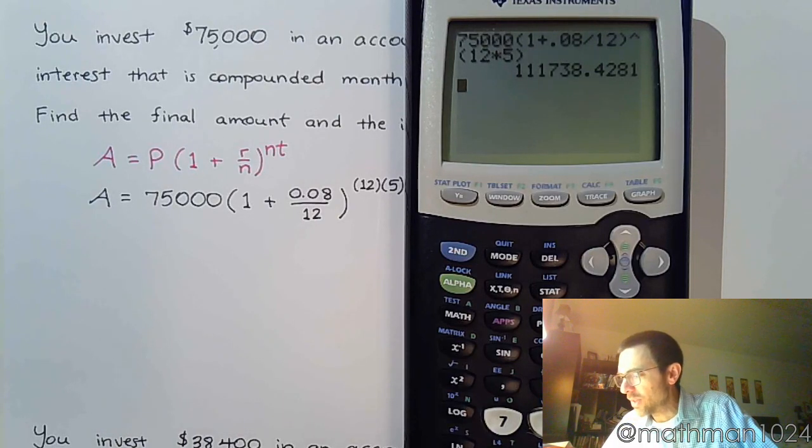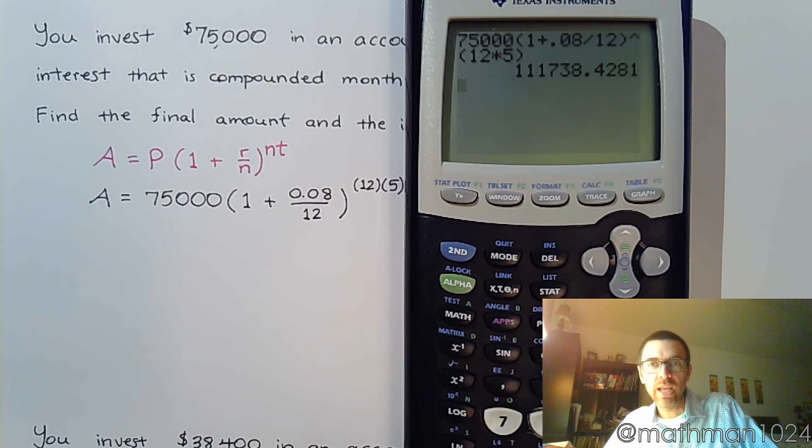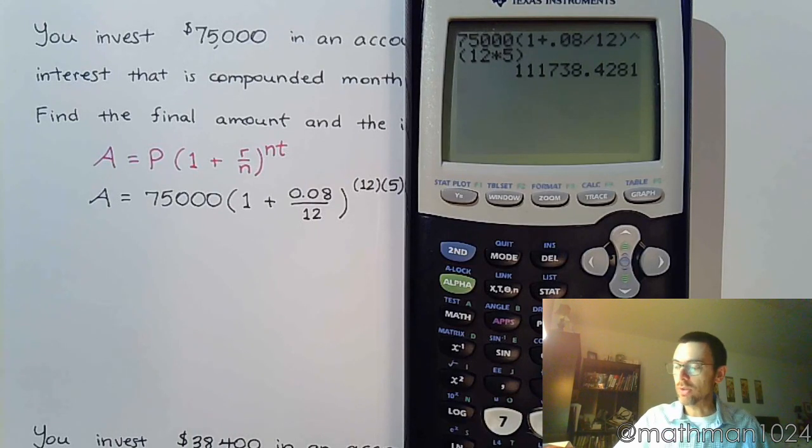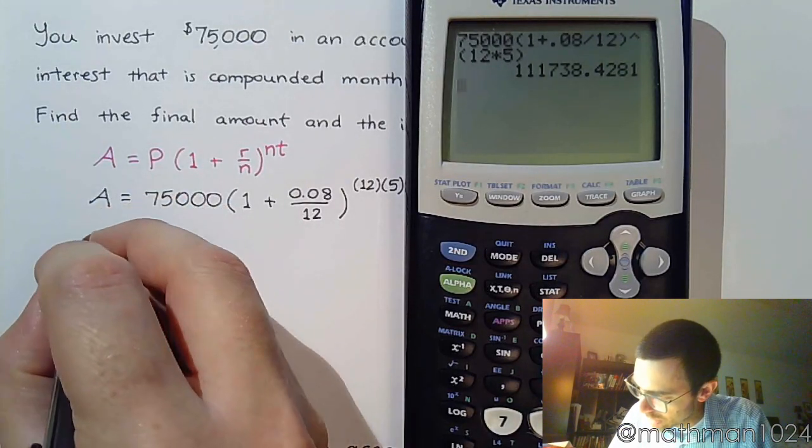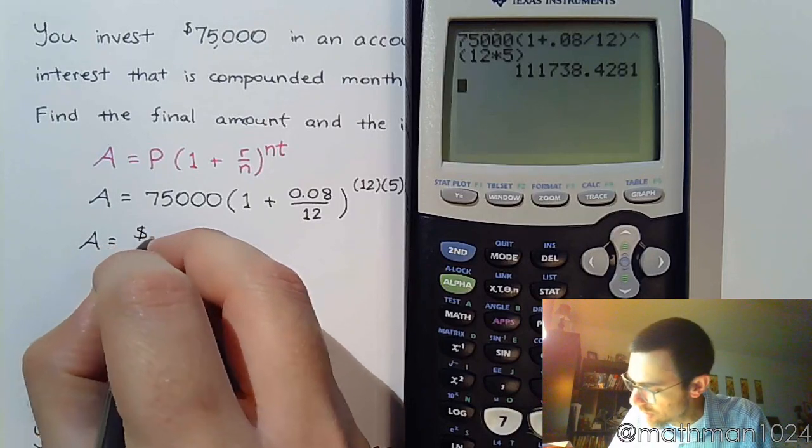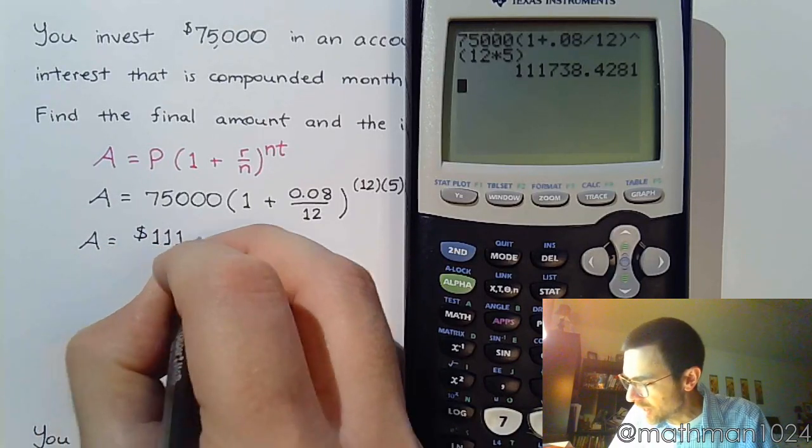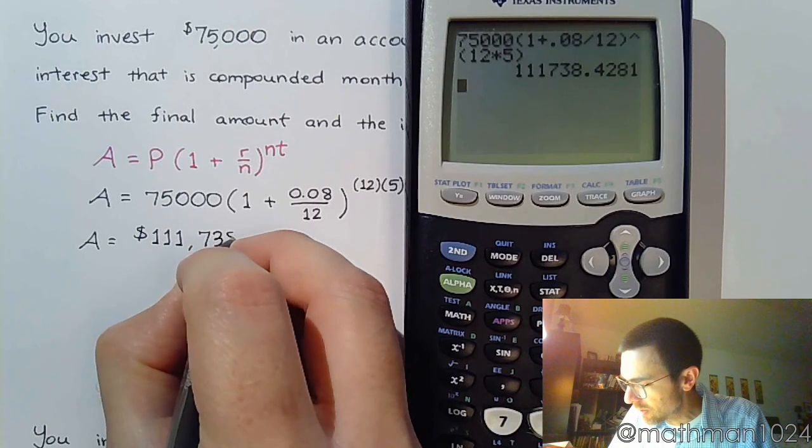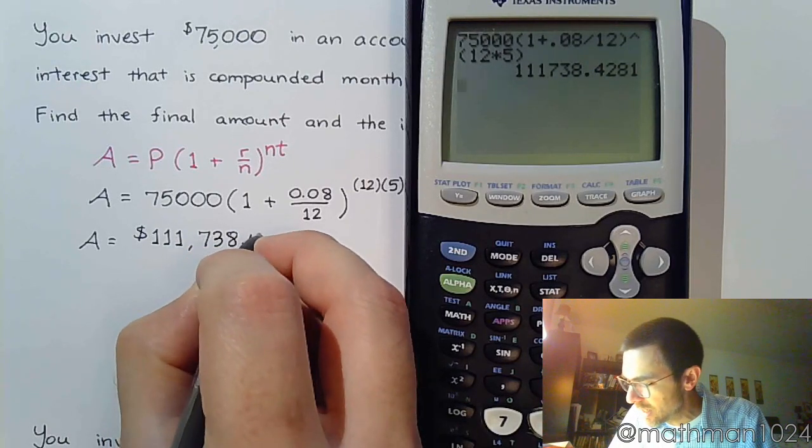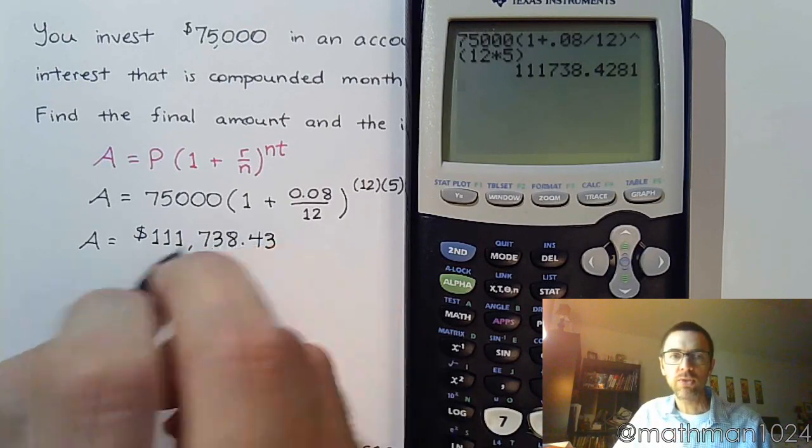So, here I have $111,738.43 when we round correctly. All right, so, $111,738.43.